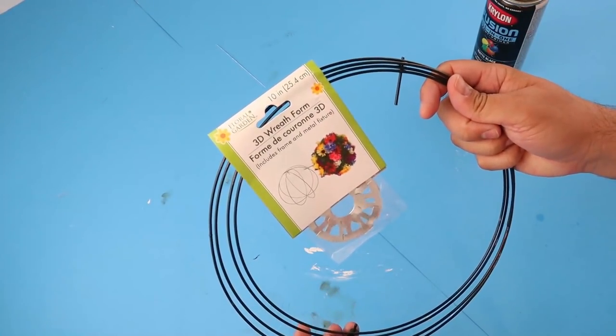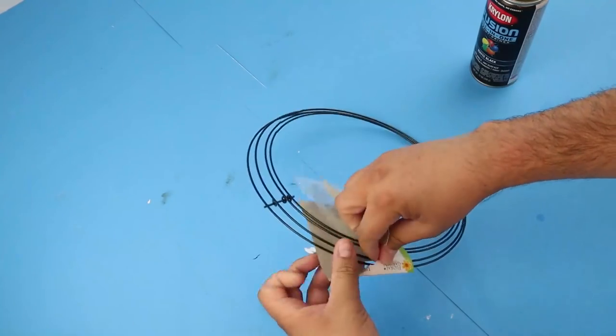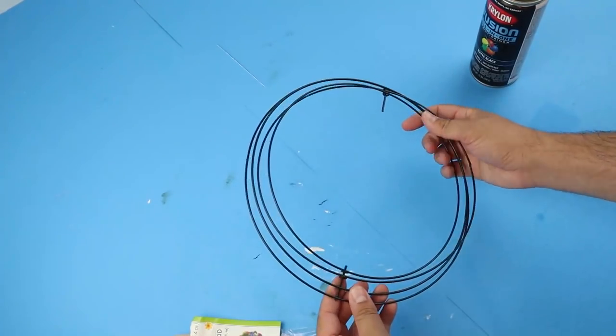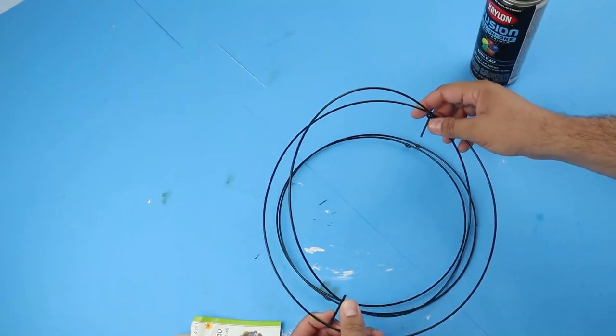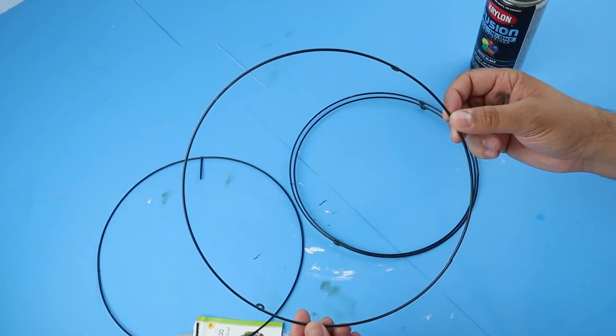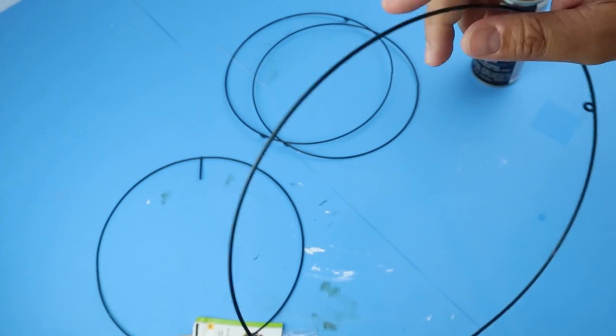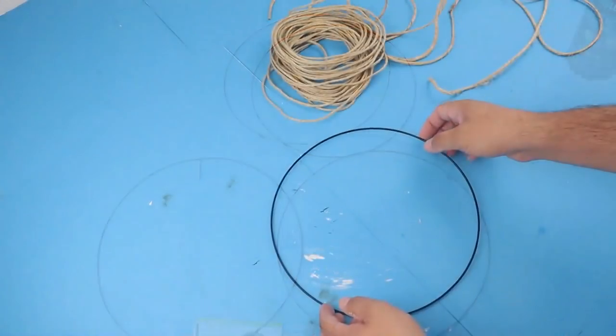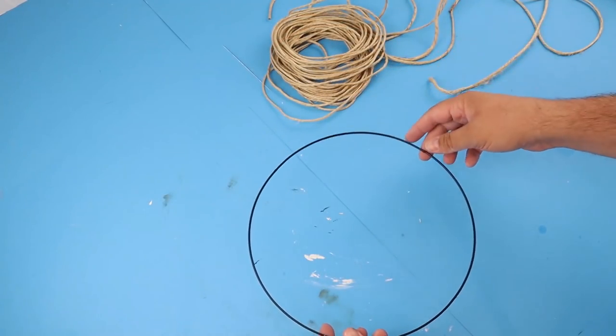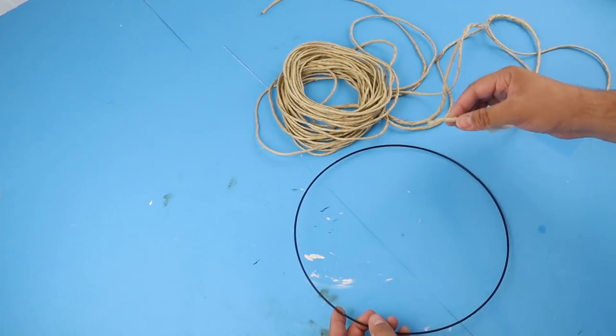For this project I'm using this 3D wreath form from Dollar Tree and I'm using the second biggest one. But honestly you could use any of these, or you could even use like a hoop wreath form from your local craft store or even like an embroidery hoop. I think both of those options would look really good and you could make those a lot bigger. And this is pretty dark as is, but it is kind of a green tint, so I just went ahead and spray painted mine black. You could leave it if you wanted to though.